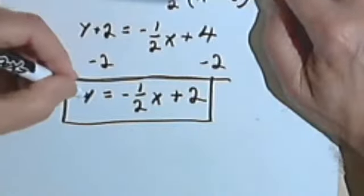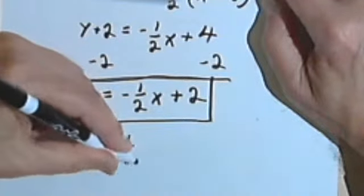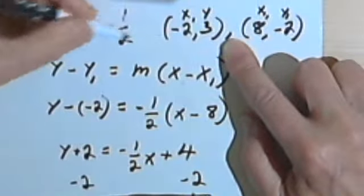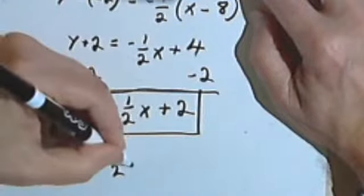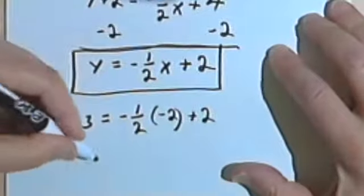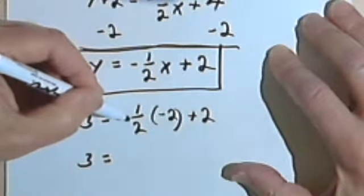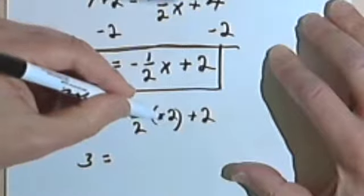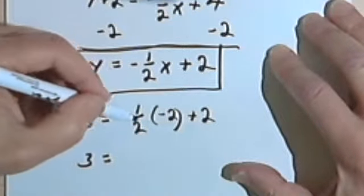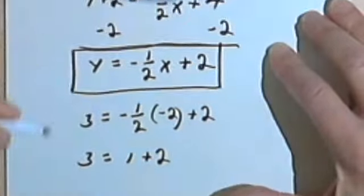So instead of this y, I'm putting in a 3, equals negative one-half... for the x I'm using negative 2... one-half times negative 2... plus 2. So I get 3 equals... let's see... negative one-half times negative 2... negative times negative is positive, and one-half of 2 is 1. So I've got 1 plus 2.